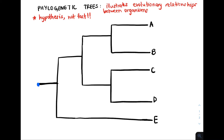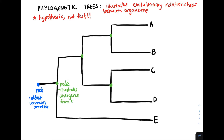Let's look at some key aspects of reading phylogenetic trees. This is called a root. The root is the oldest common ancestor of all the species in the phylogenetic tree. The places where nodes are marked are called nodes, and nodes are where species branch off from a common ancestor — illustrating divergence from a common ancestor.